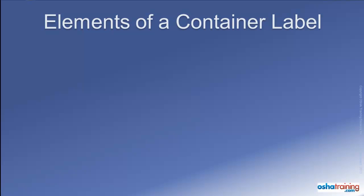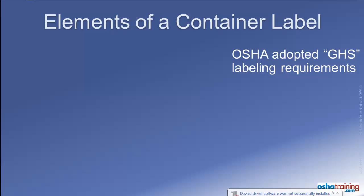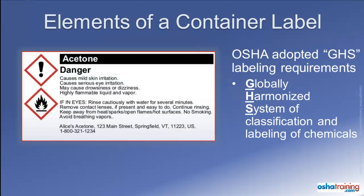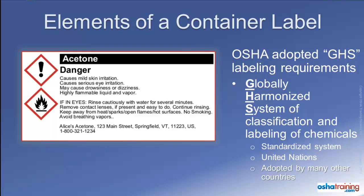To improve information available to workers, OSHA adopted the labeling requirements of the GHS — the Globally Harmonized System of Classification and Labeling of Chemicals. The GHS is a standardized system, meaning there will be consistency in the information appearing on container labels once fully adopted. This system was developed by the United Nations, which means container labels for products from around the world will be standardized, which is of increased importance in our global economy.